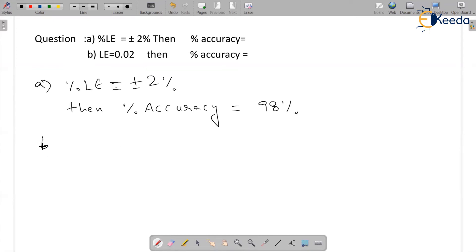The next option B, then what they ask: limiting error is equal to 0.02, then percent accuracy. So when limiting error, percentage accuracy...